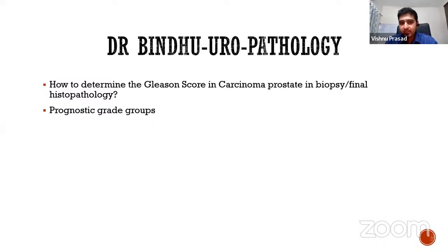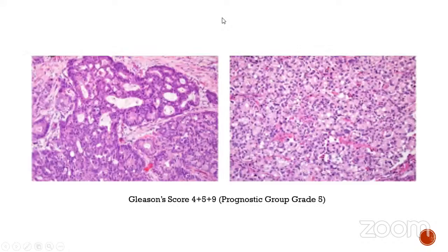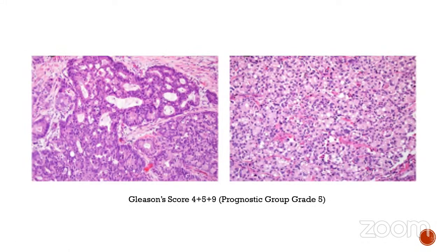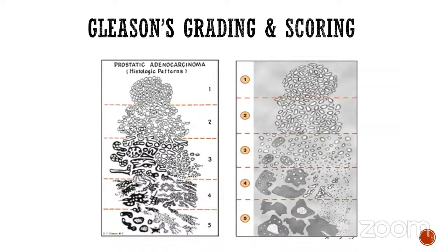The first question is for Dr. Bindu about the basics of CA prostate and Gleason scoring: how would you determine the Gleason score in a biopsy and in the final histopathology, and what are the prognostic grade groups? In this case the report is prostatic acinar adenocarcinoma with Gleason score 4+5 and prognostic grade group 5. As seen in the images: on the left the tumor cells form fused glands or a cribriform pattern, and on the right they form solid sheets.